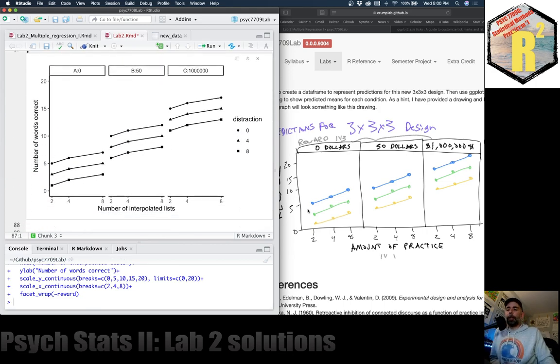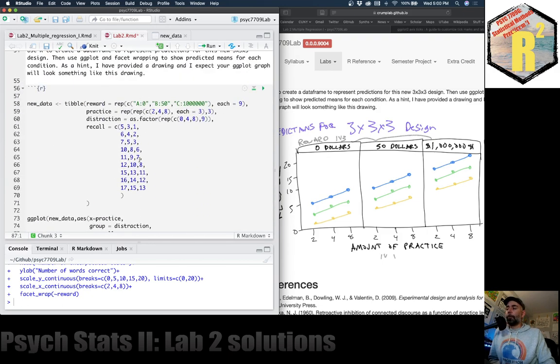We've pretty much made a graph like this using ggplot2. We've used facet wraps. We've got a 3 by 3 design here. And something like this would certainly get you the full three points for this question. All right, that's all. See you next week.